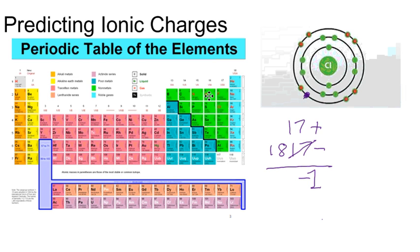If it's in group six, it will form an ion with a charge of minus two. And if it's in group five, it will form an ion with a charge of minus three.